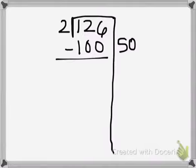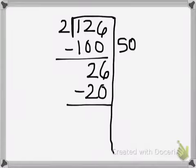So once I've taken that out I know that I still have 26 left to divide out. So I may not know right off the top of my head what 26 divided by 2 is, but I know I can take out another little portion. I can take out 20 because I know that 2 times 10 can get me 20.